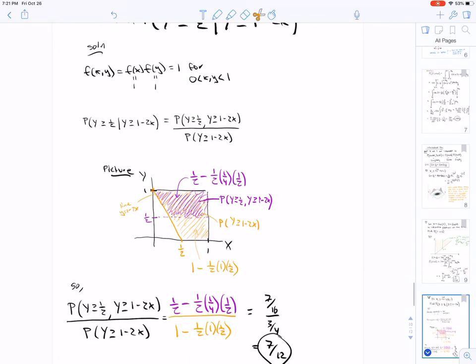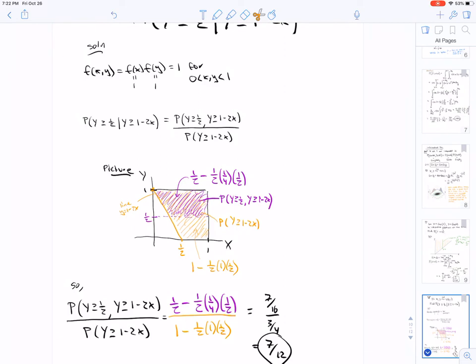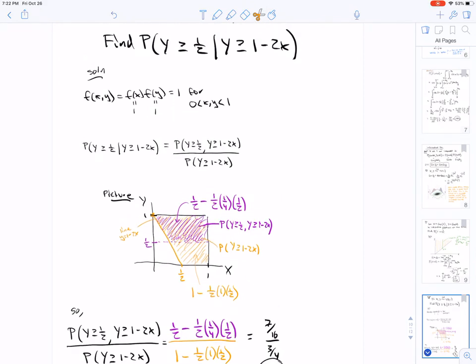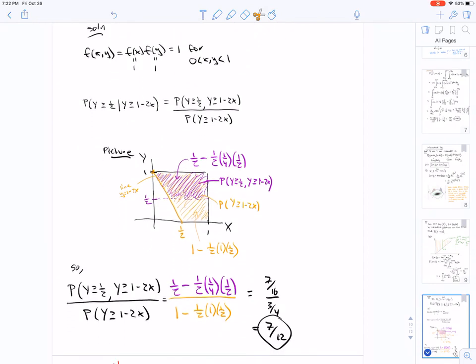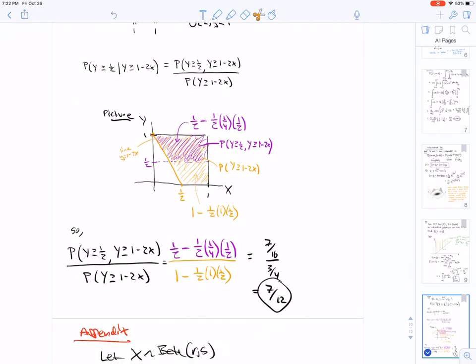Using Bayes' rule here, we can recognize this probability as the area of the purple divided by the area in the orange. The probability here is the volume under the joint density, which is one. Because the joint density is one, the volume is just the same, it's just the area of the region. We can just use basic geometry to find the area of the purple and the area of the orange, and you get 7/12.